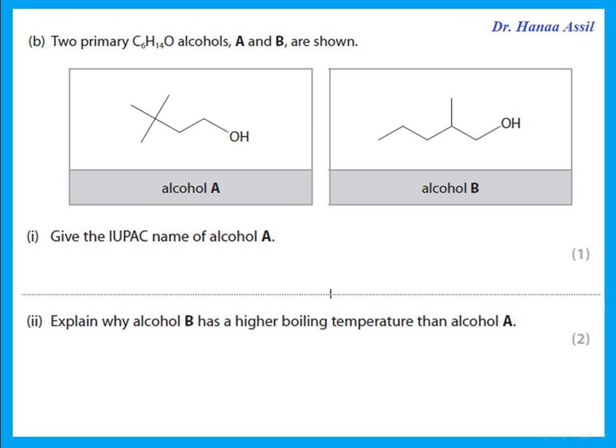Two primary alcohols A and B are shown. Give the IUPAC name of alcohol A. Find the longest chain and number from the side that gives the lower locant for the OH group. The chain is four carbons, so it's butanol, and there are two methyl groups on carbon 3. The name is 3,3-dimethylbutan-1-ol.